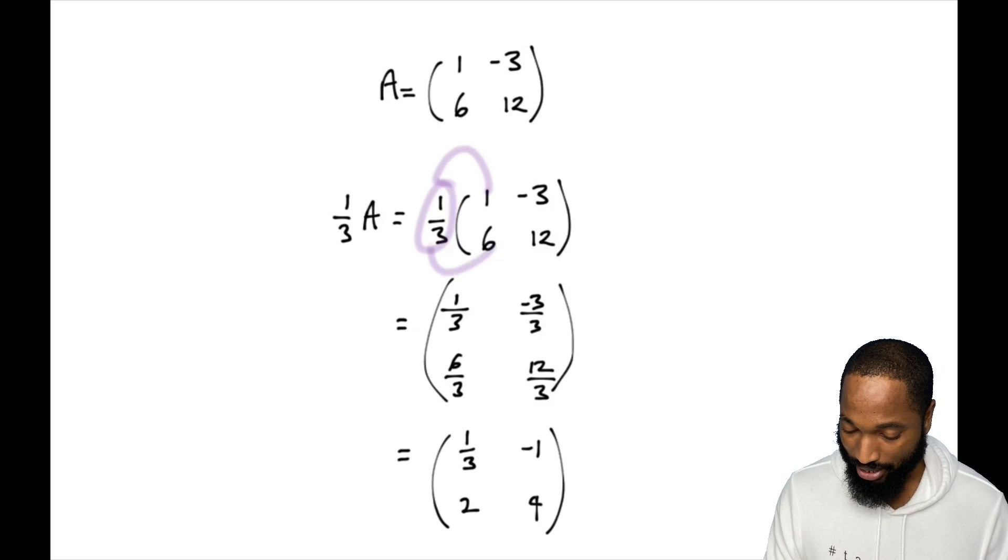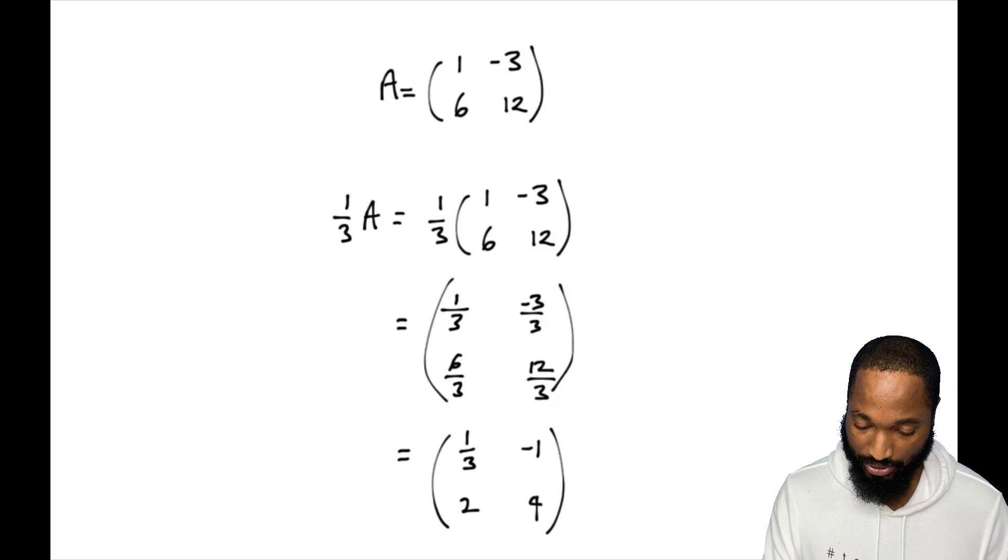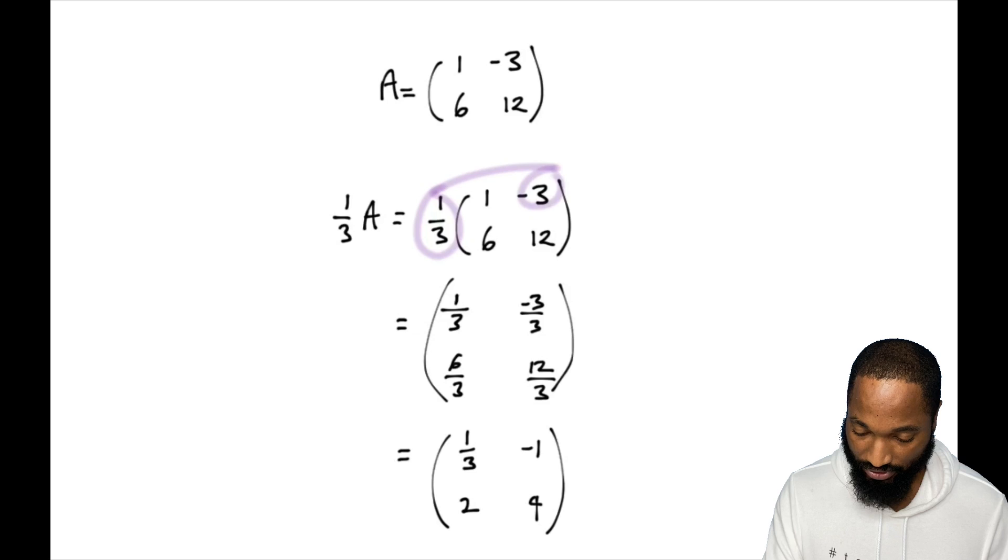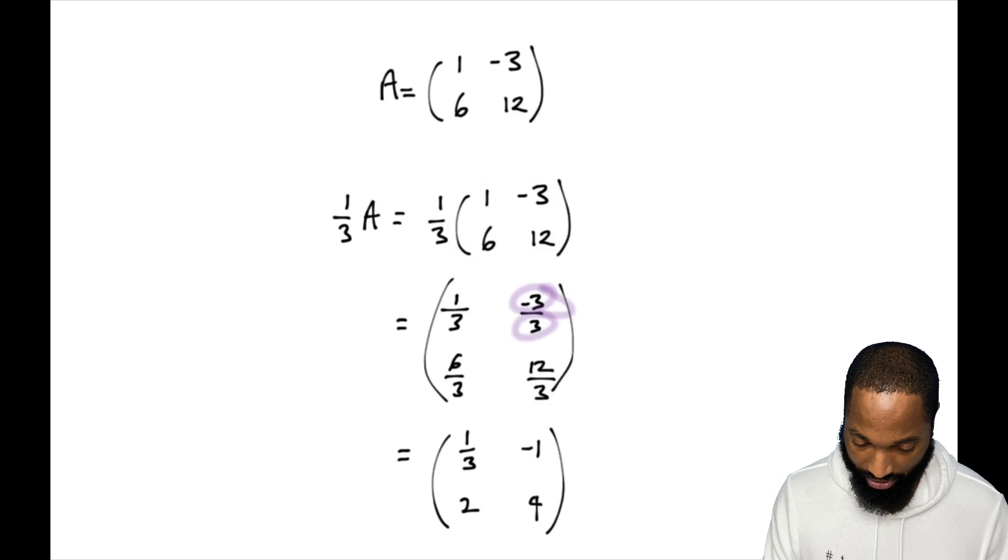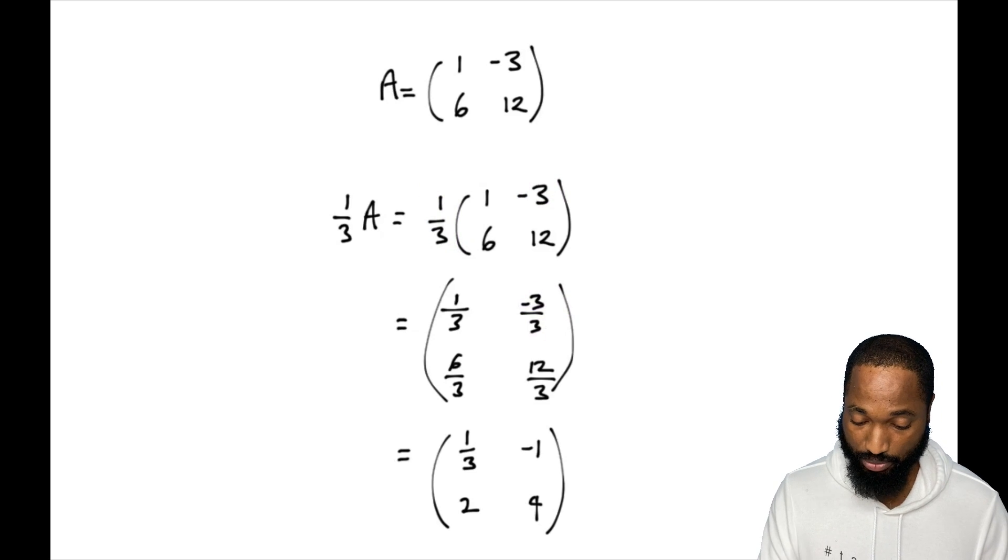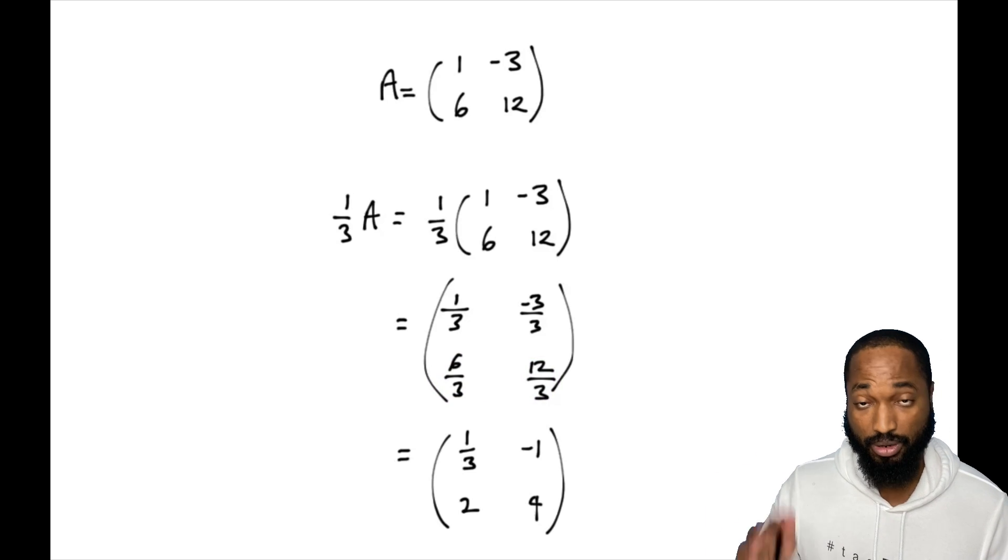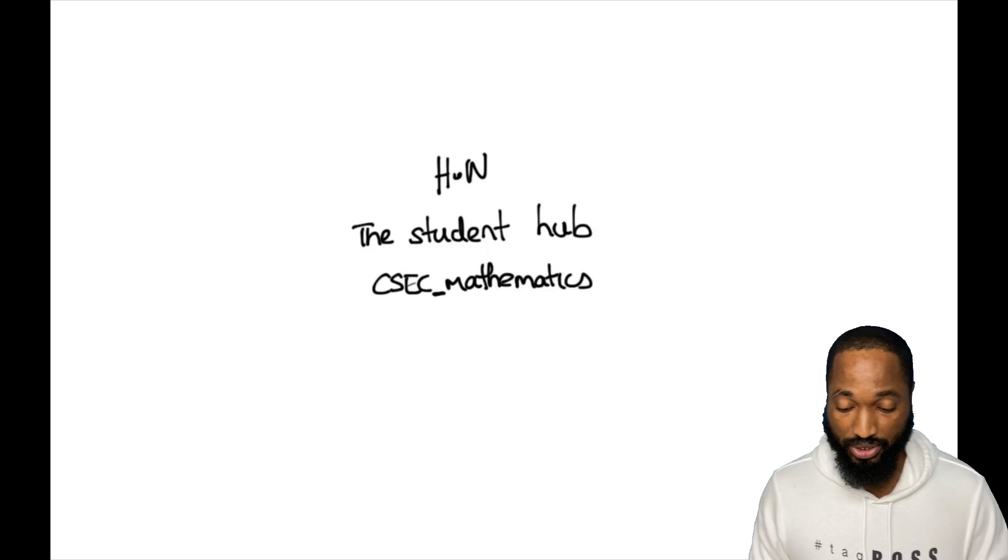One little trick before we go: what about if the scalar was a fraction? If the scalar was a fraction, this is what's going to happen. Don't panic - just put the term and multiply by the numbers same way. A little trick that you can do is just put each of the numbers over the denominator. See what's happening? So a third by one is one over three. A third by negative three is negative three over three. And you keep doing that with all the elements, and you break it down, simplify.